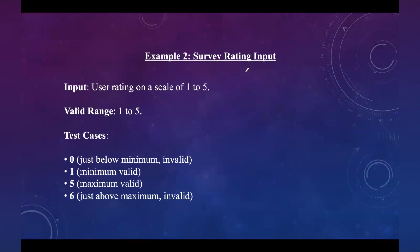The next example is survey rating. The input is user rating on a scale of 1 to 5, where a user can provide feedback with up to a 5-star rating. The minimum valid value is 1 and the maximum valid value is 5. For invalid boundary values: 0 represents just below the minimum, which is an invalid case. Taking the value 6 — just above the maximum of 5 — is also invalid, as the range is between 1 to 5.